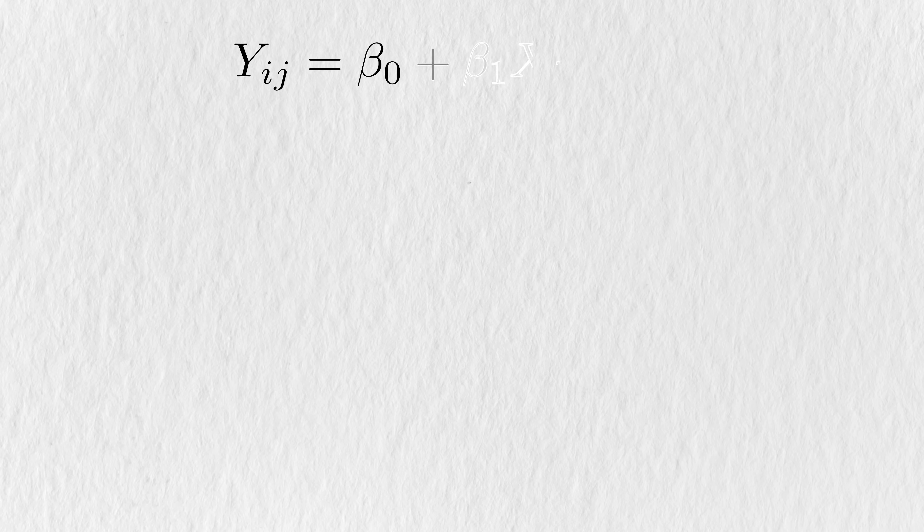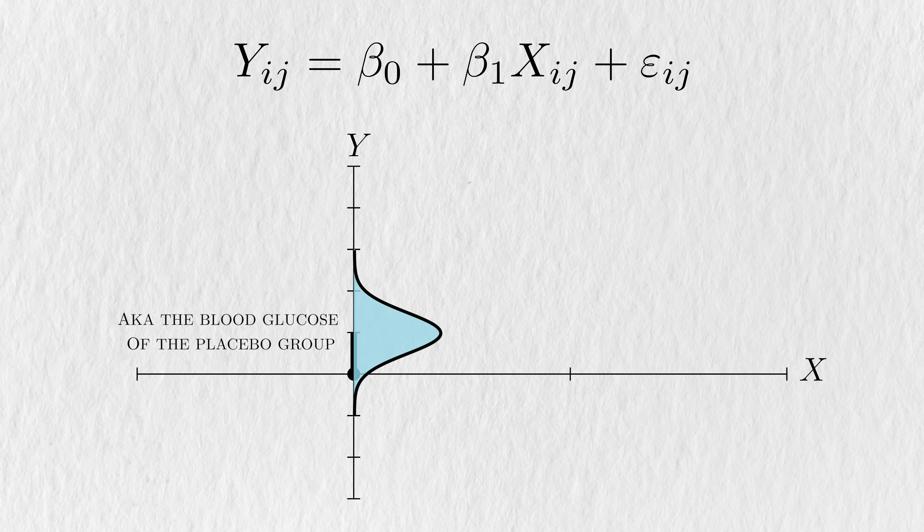In our example, we typically use a linear regression to investigate the relationship between a continuous outcome, y, and some independent variable x, the treatment. In this model, we care about the distribution of the outcome, conditioned on a specific x value. We usually assign the reference group as x equal to 0, so the outcome will have a particular distribution centered around beta0. In our example, this would be the blood glucose distribution for the placebo group, and beta0 would represent the average value we'd see.